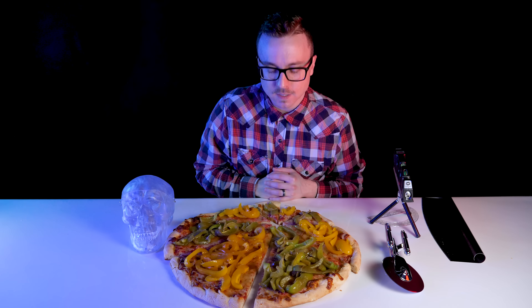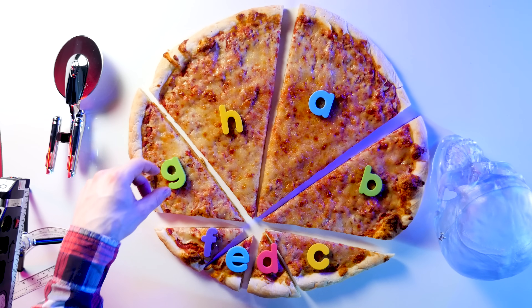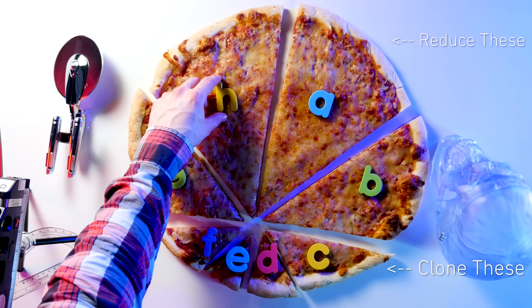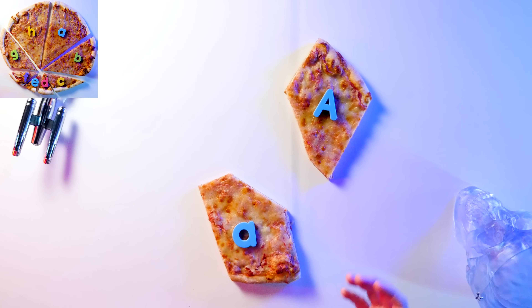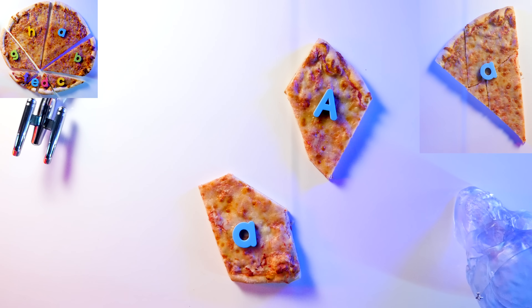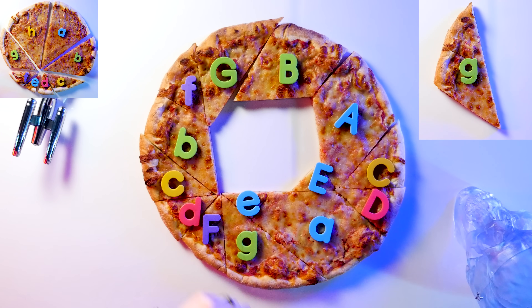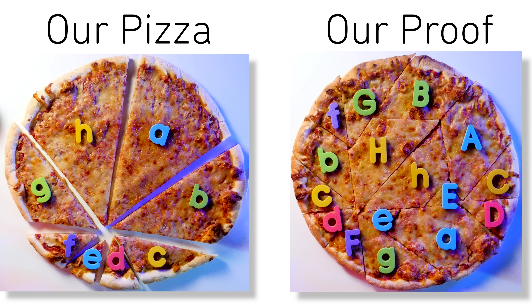And our proof is in the pizza. We'll label our pizza slices A through H, and then we'll represent each slice as two equal shapes. We'll clone the four smaller slices, while the four larger ones will be reduced to make up for that duplication. They'll be weird shapes, but they'll be equal. We'll label them with a capital letter and a lowercase letter to differentiate which slice is yours and which slice is mine. So here's A, B, C, D, E, F, G, and finally H. The large slices G, H, A, and B are divided into two equal wedges, and the small slices F, E, D, and C are duplicated within the pizza — proving that we split our original pizza perfectly for two people.